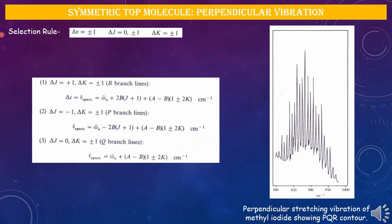For perpendicular vibration of a symmetric top, the selection rule is Δv = ±1, ΔJ = 0, ±1, and ΔK = ±1. For R branches ΔJ = +1, for P branches ΔJ = −1, and for Q branches ΔJ = 0, but for all three branches ΔK = ±1. Well-separated lines are observed in the Q branches, while P and R branches show an alternating intensity variation in a strong-weak-weak-strong pattern, observed due to the threefold axis of symmetry present in symmetric top molecules.